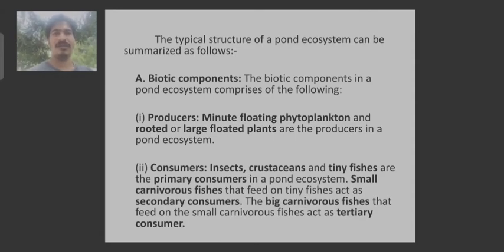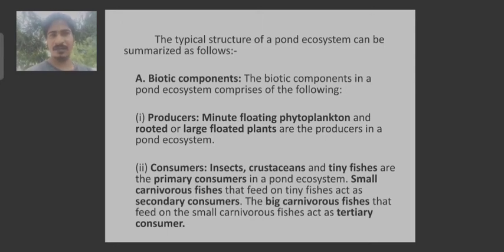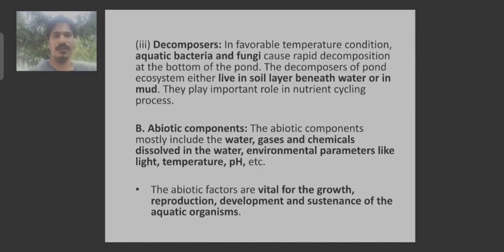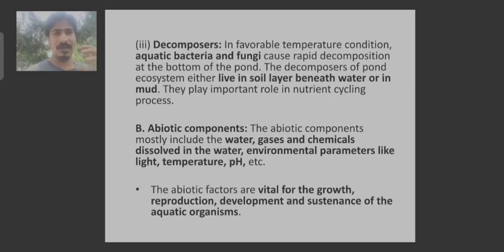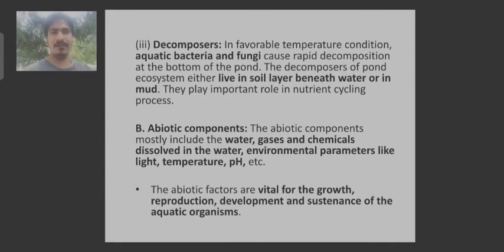Next are consumers. Mostly the insects, crustaceans, and tiny fishes are the primary consumers, followed by the small carnivorous fishes as secondary consumers, and the large carnivorous fishes as tertiary consumers in a pond ecosystem. Decomposers — in favorable temperature conditions, aquatic bacteria and fungi cause rapid decomposition at the bottom of the pond. The abiotic components include water, gases, chemicals dissolved in the aquatic environment, and factors like light, temperature, and pH.